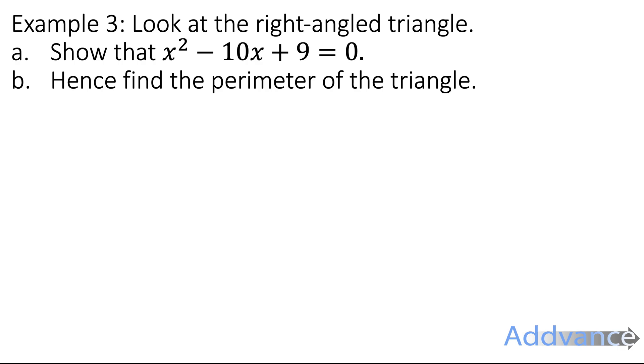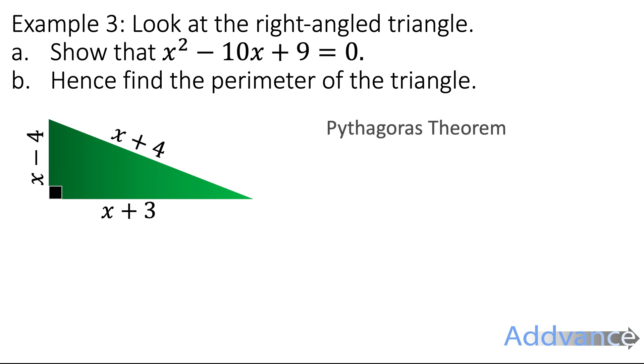For example 3, look at the right-angled triangle. And we're going to show that x² - 10x + 9 = 0. And then we're going to find the perimeter of the triangle. Okay, so for this, because we know all three lengths of a right-angled triangle, it's a good idea to use Pythagoras theorem: a² + b² = c².